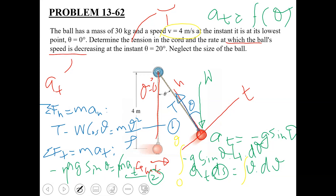For the limits of integration: the pendulum was already traveling at a speed of 4 meters per second when theta equals 0 degrees. So the lower limit for v is 4, not 0. If the lower limit for theta is 0, then accordingly the lower limit for v must be 4. We integrate to find the value of v at theta equals 20 degrees.